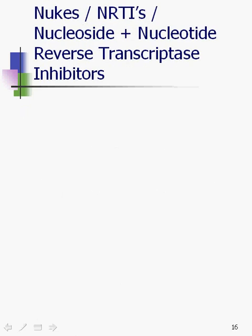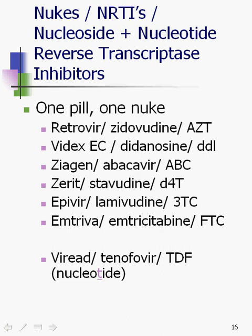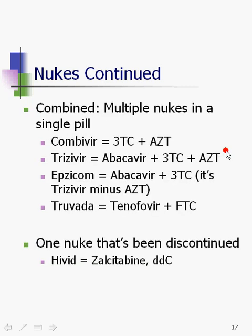Class number one is the nukes — this was the first class approved for use. Nukes, or NRTIs, nucleoside and/or nucleotide reverse transcriptase inhibitors. This is a list of familiar ones, and here is our one nucleotide analog reverse transcriptase inhibitor. The nukes have been around for a long time. There are also combination nuke pills — Epzicom, Truvada, Trizivir, Combivir — that actually have more than one nucleotide or nucleoside in them.